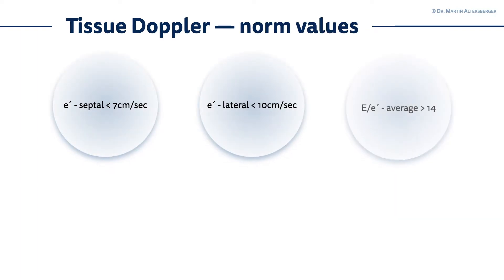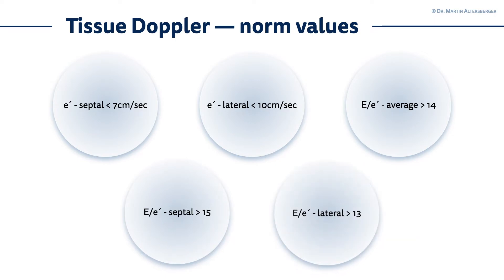The normal value cutoffs to remember: E prime septal below 7 cm/s is pathological; E prime lateral below 10 cm/s is pathological; and the E-to-E-prime ratio cutoff is 14 — everything above 14 is abnormal. If you can only measure one side: E-to-E-prime septal above 15 is pathological, and lateral above 13 is pathological. There are a lot of numbers — write them down and keep them in your echo lab for reference.